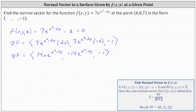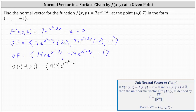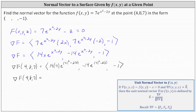Now we evaluate the gradient of big F at the point (4, 8, 7). The x component is 14 times 4 times e to the power of 4 squared minus 2 times 8. The y component is negative 14 times e to the power of 4 squared minus 2 times 8. The z component is negative 1. Simplifying: 14 times 4 is 56, and e to the power of 16 minus 16 equals e to the 0, which is 1. So we get 56 for the x component, and negative 14 for the y component.